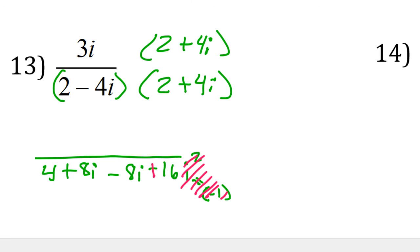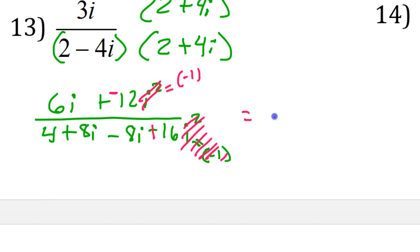Meanwhile, in the numerator, I'm just going to do a distributive property. So 3i times 2 is going to be 6i. 3i times 4i is going to be 12i squared, because i times i is i squared. Again, i squared here is negative 1. So that's going to have the effect of changing this to a negative 12. And once you've done that, then no more i. So really, we just have to clean this up. So first of all, in the numerator, in the proper order, we're supposed to put the real part first. So now I've got this negative 12 plus 6i. Down here, positive 8i and negative 8i, they cancel each other out. And now I have 4 plus 16. So that is 20.